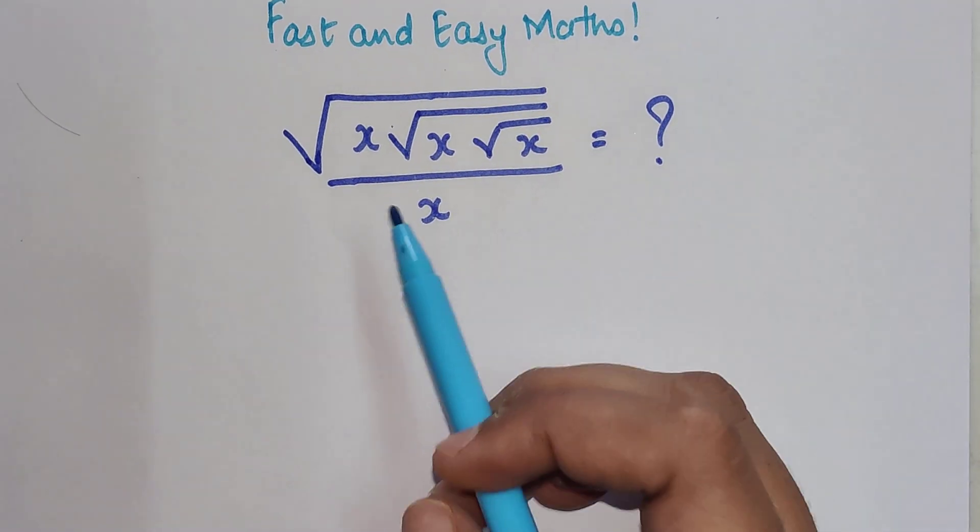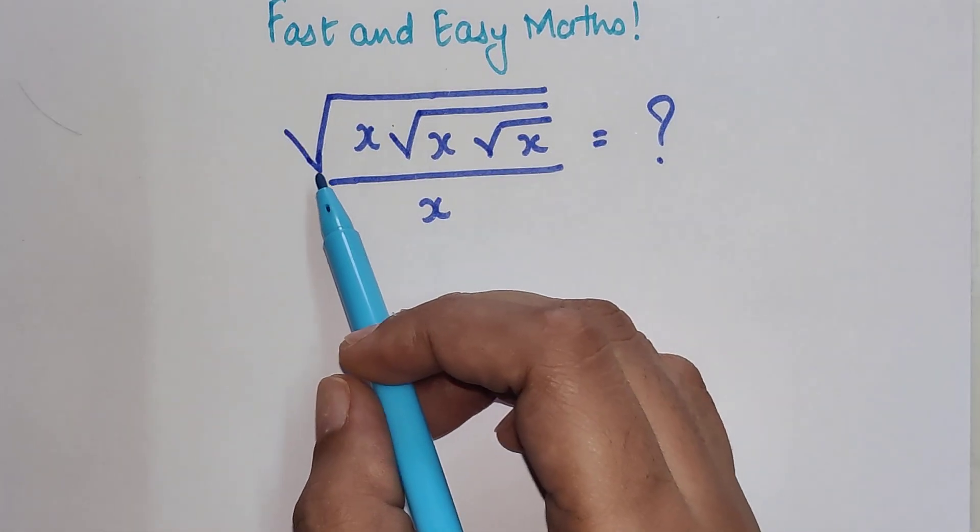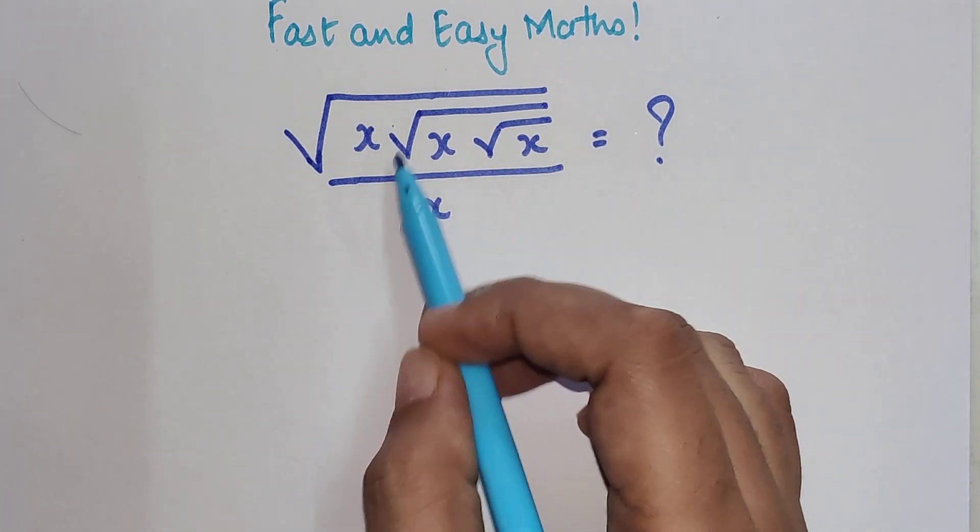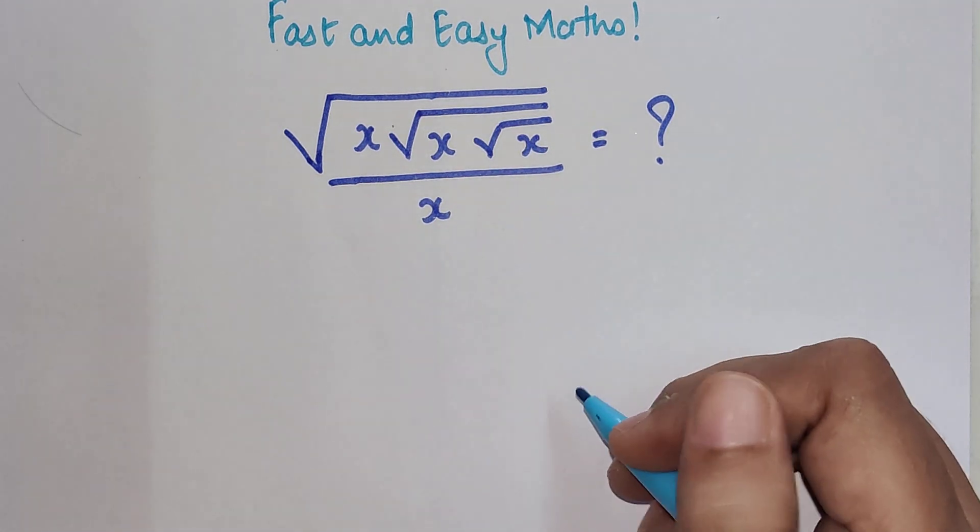So students, today we are going to solve an interesting algebra question. Now please understand, the question goes like this: Root of x multiplied by root of x multiplied by root of x divided by x is equal to 4.